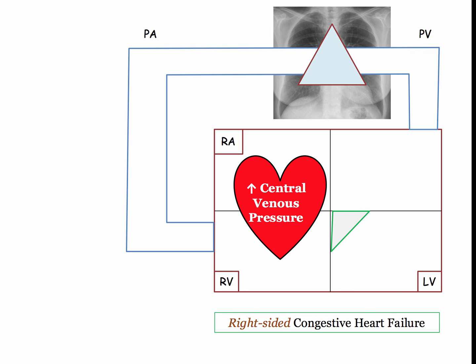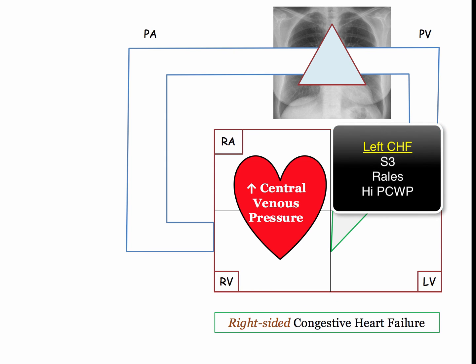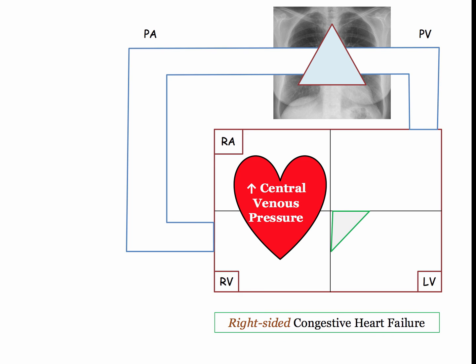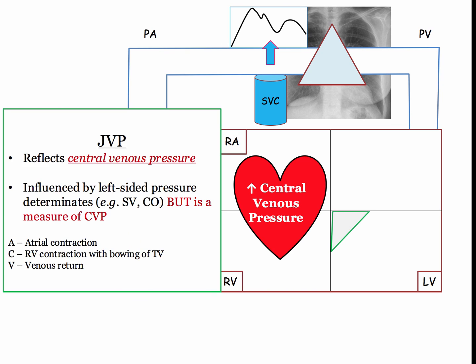Key differences between right and left-sided heart failure: the hallmark of left-sided congestive heart failure is pulmonary venous congestion with S3, rales, and elevated pulmonary capillary wedge pressure. Right-sided heart failure is devoid of these features. The common pathophysiologic description will include an elevation of central venous pressure. The first manifestation is elevation of jugular venous pressure, which reflects the elevated central venous pressure and is a measure of right-sided pressures. This is an important distinction.